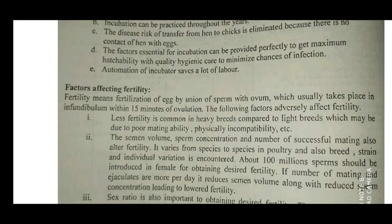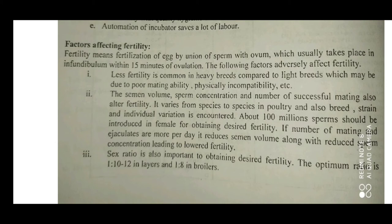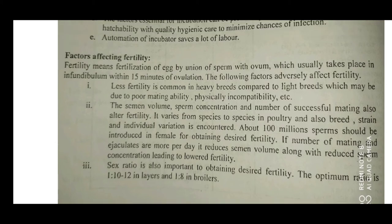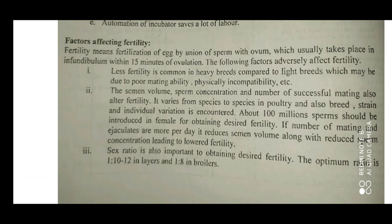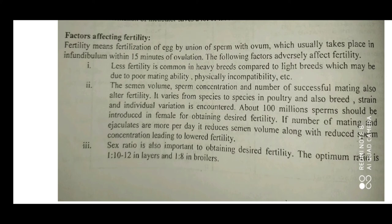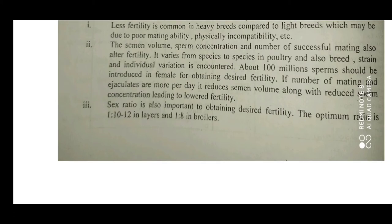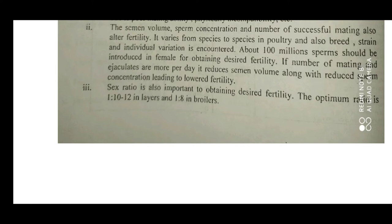Factors affecting fertility: fertility means fertilization of eggs by union of sperm with the ovum, which usually takes place in the infundibulum within 15 minutes of ovulation. Factors adversely affecting fertility include: first, less fertility is common in heavy breeds compared to light breeds due to poor mating ability and physical incompatibility. Second, semen volume, sperm concentration, and number of successful matings also alter fertility. Third, the male-to-female ratio is important — the optimum rate is 1:10–12 in layers and 1:8 in broilers.